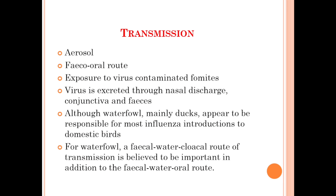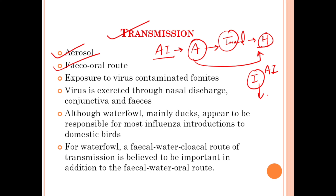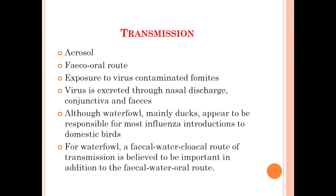The first route of transmission is aerosol — the type A influenza virus can travel to healthy birds and cause avian influenza to develop. The next route is the fecal-oral route: if any bird excretes this virus in its feces and a healthy bird comes into contact with or feeds near those feces, it will also get the infection. Additionally, exposure to the virus can occur through contaminated fomites.